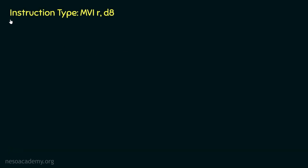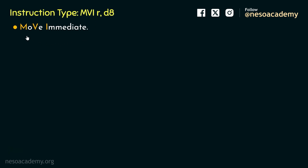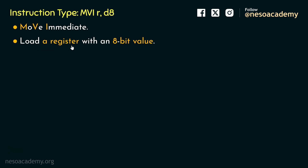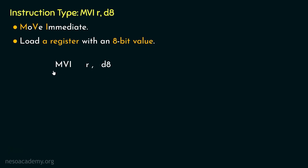Coming to the instruction type MVI R,D8 — as you can notice, we have a mnemonic here: MVI. Let's learn what it stands for. It stands for MOVE IMMEDIATE. What does it mean? It means we are supposed to load a register with an 8-bit value. Let's now decode the instruction. We have MVI R,D8 — the mnemonic which stands for MOVE IMMEDIATE.